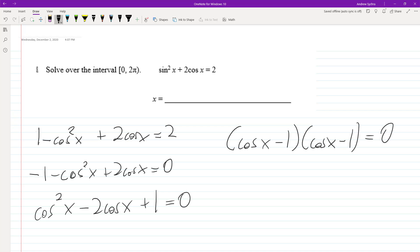So essentially, when does cosine x equal 1? It equals 1 at 0 and 2π, but because this is a brace instead of a bracket, it doesn't include it. So it's just going to be x is equal to 0.